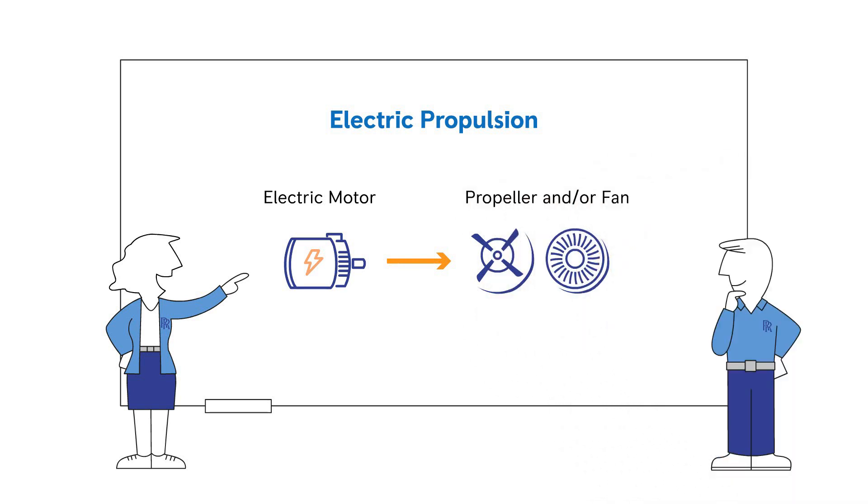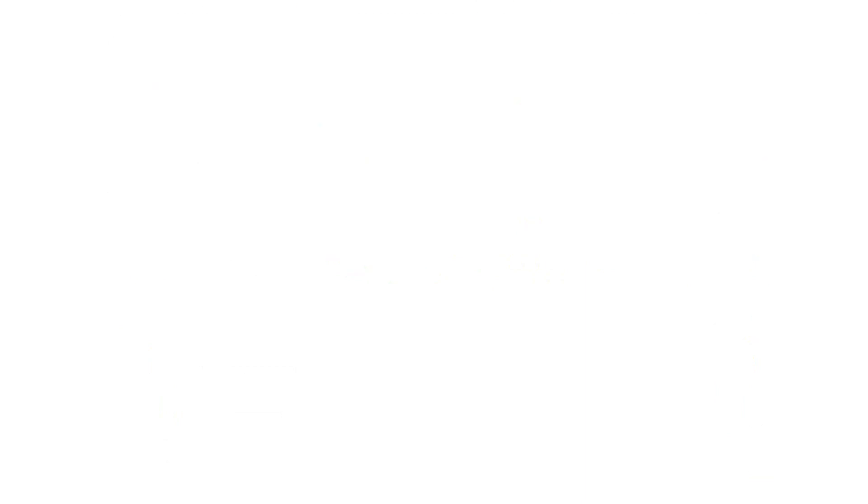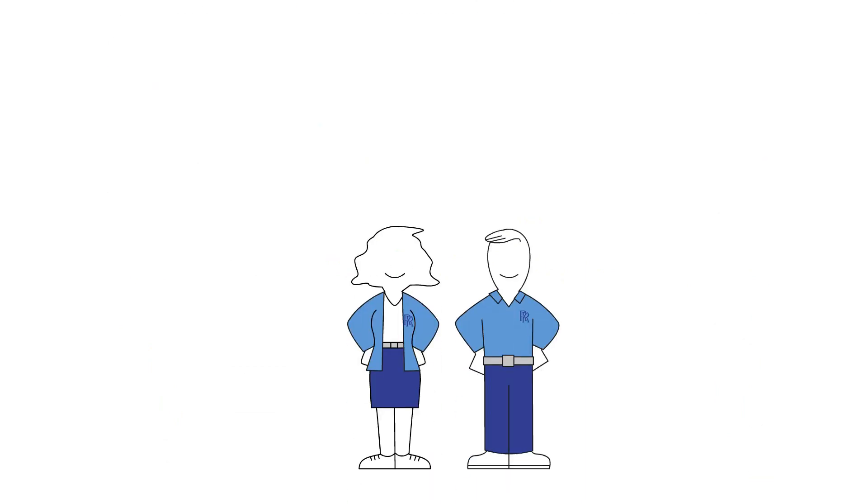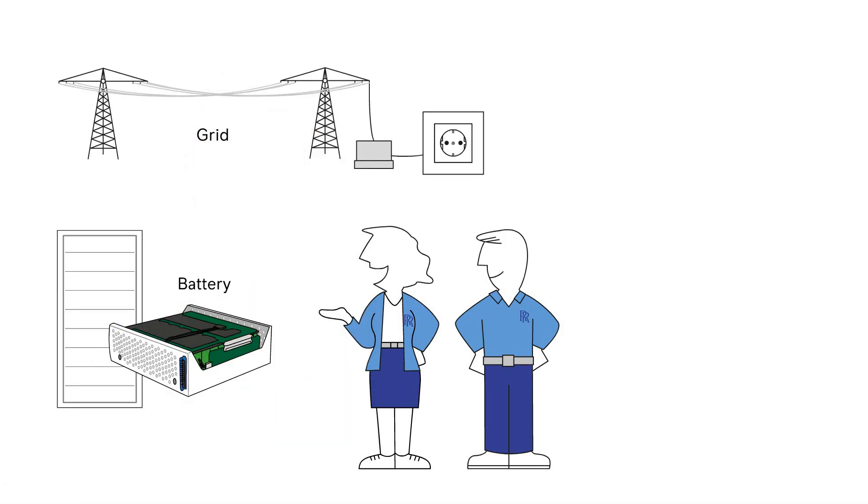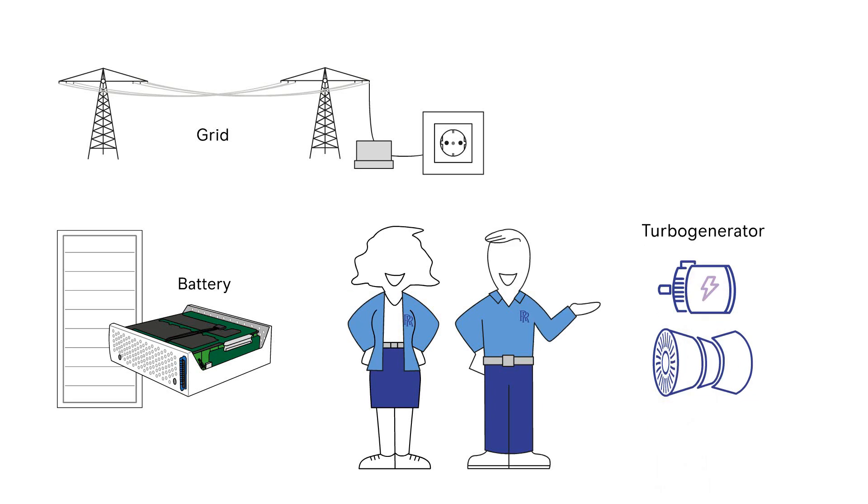To operate, the electrical motor needs electrical energy, which can come directly from the grid, from an energy storage device like a battery, or a turbo generator or a fuel cell, converting fuel to electrical energy.